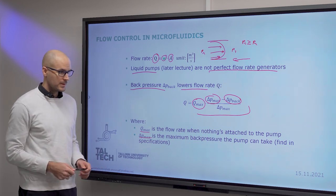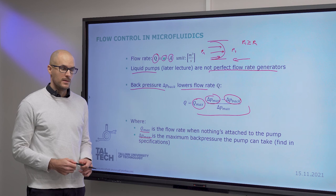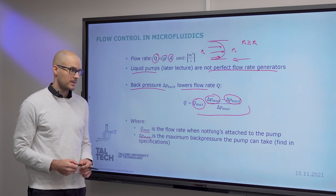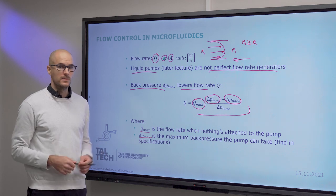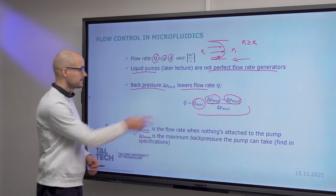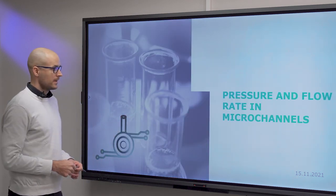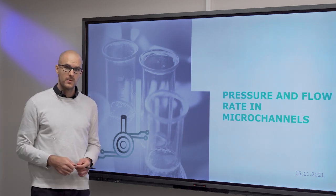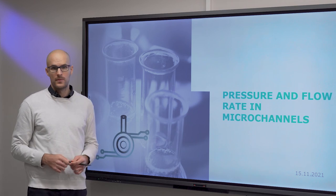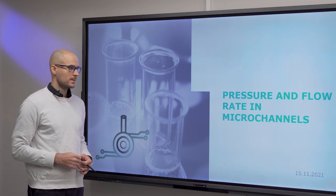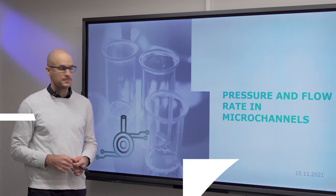And usually to counter the effects of back pressure, we use check valves that allow only unidirectional flow. And that was it for this video. And you can solve the exercise in Moodle.